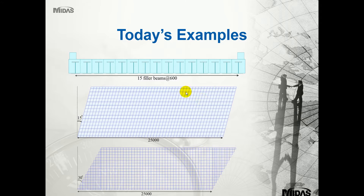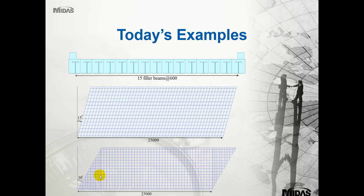We've got two examples today. The first model has 15 filler beams at 600mm centres at a 15 degrees skew. This is a plate model and Eurocode 3 steel optimisation will be carried out. We'll also be doing the slab Wood Armer moments for the rebar calculations, considering bending and torsion in the deck. The second deck is at 30 degrees skew - once over 20 degrees we need the transverse elements to be inclined at a right angle to the deck. This model focuses on composite action and composite design to Eurocode 4 standards.